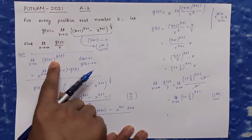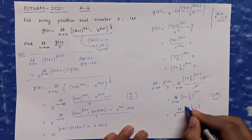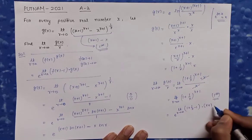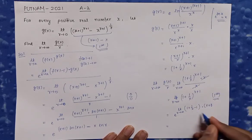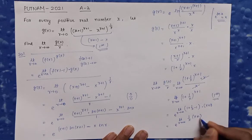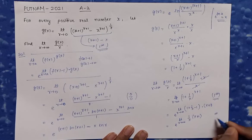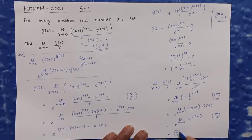Using the 1^∞ formula directly: e raised to the power of limit as x tends to infinity of [(1 + 1/x - 1) × (x+1)] = e raised to the power of limit as x tends to infinity of [(1/x) × (x+1)]. This is ∞/∞ form; applying L'Hôpital's rule and differentiating numerator and denominator gives 1. So the answer is e^1 = e.